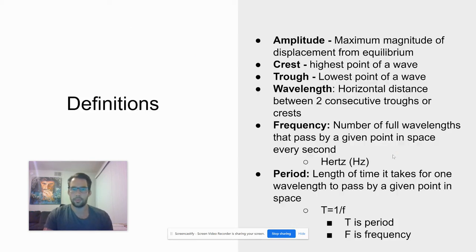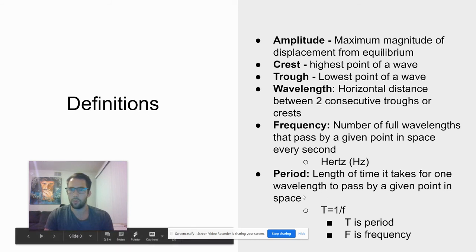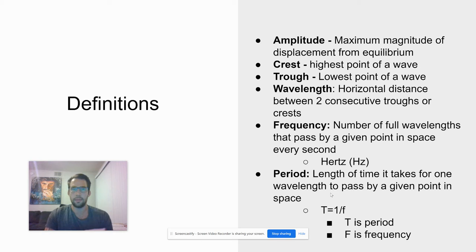So what is a period exactly? It's going to be the length of time it takes for one wavelength to pass by a given point in space. So it might take two seconds for a full wave to pass by a given point, or the period would be two seconds.